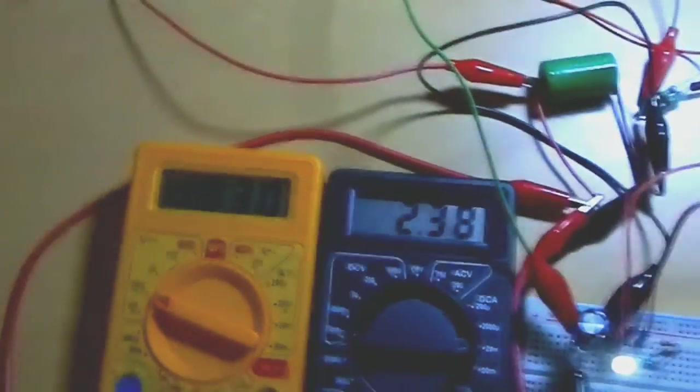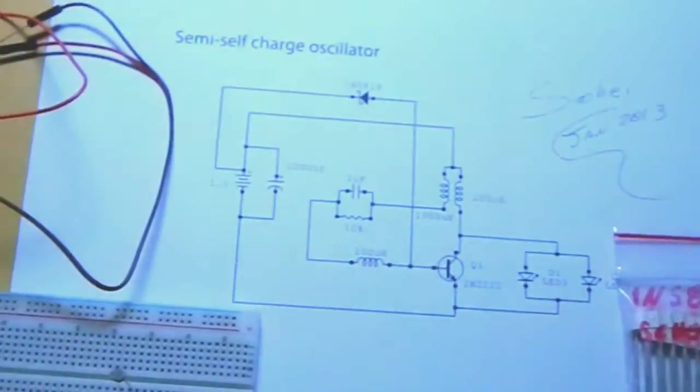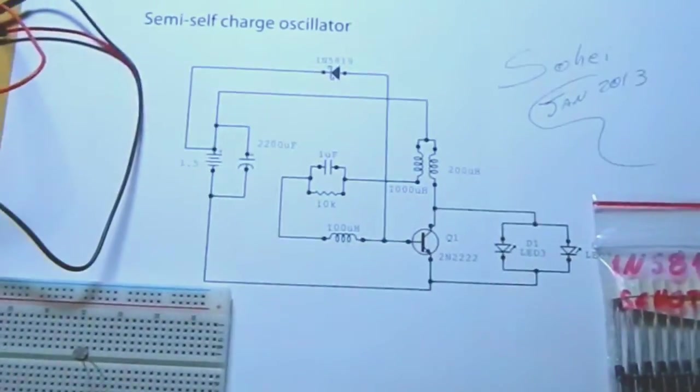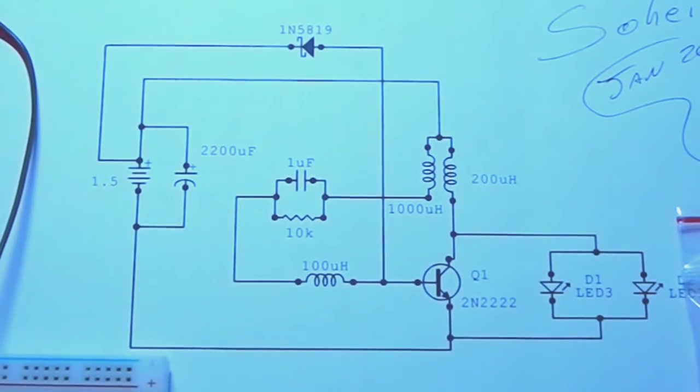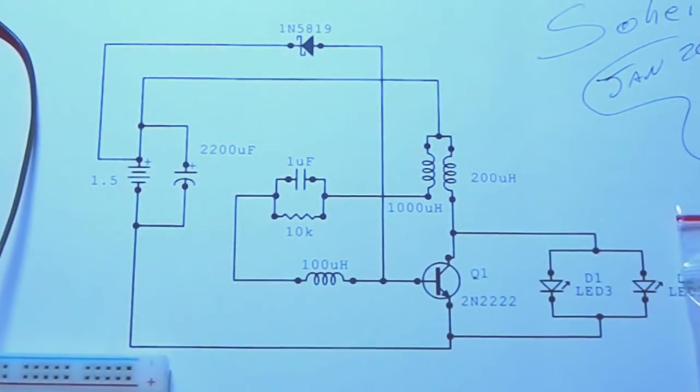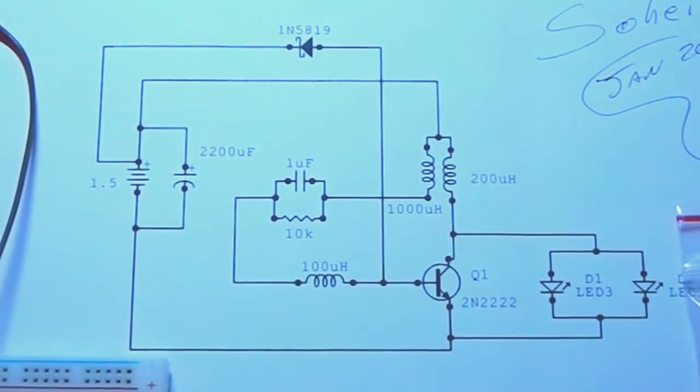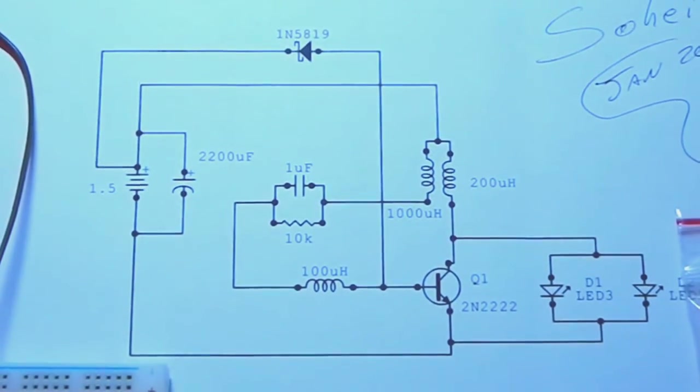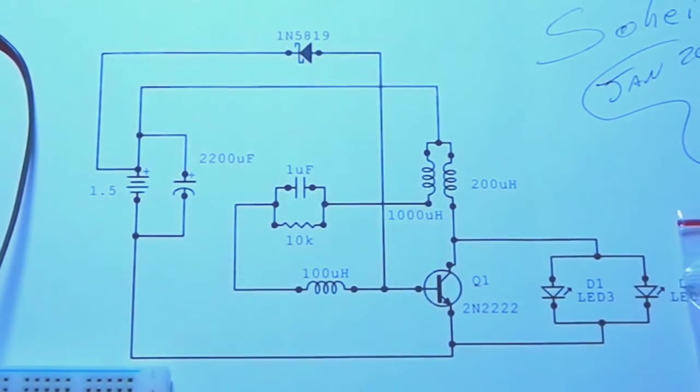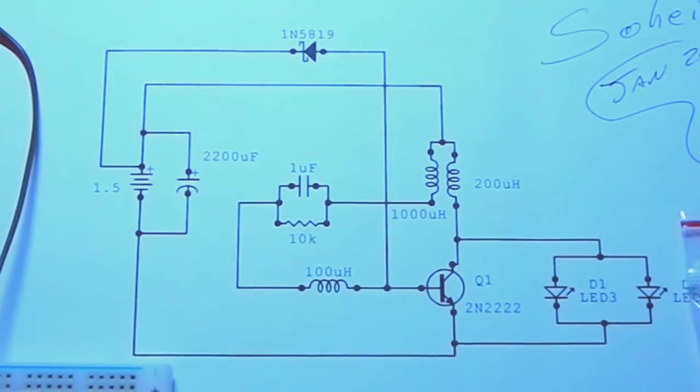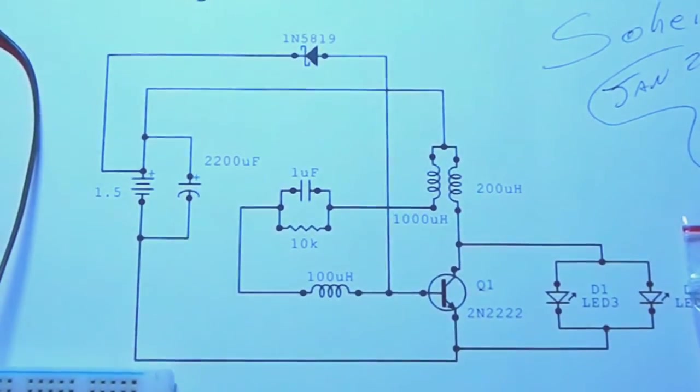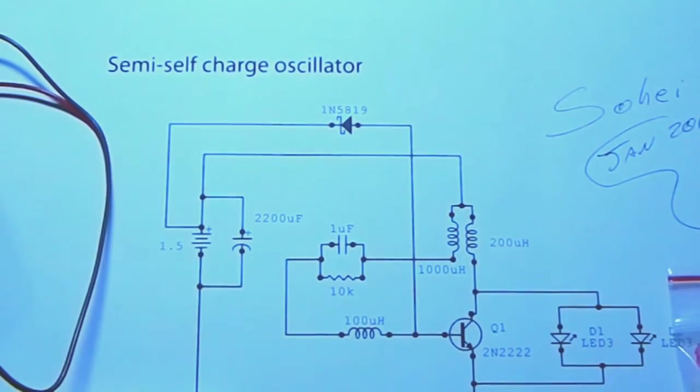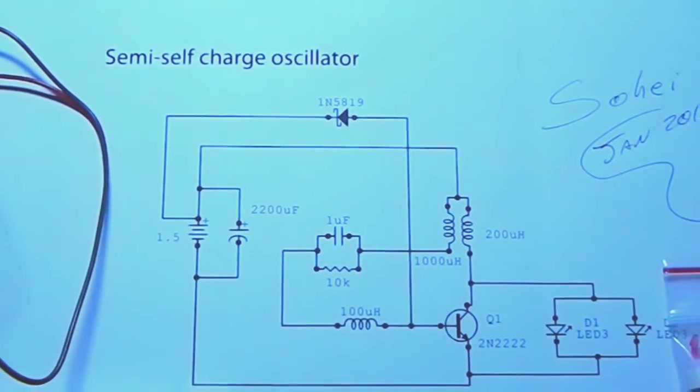So again, here is the circuit. Let me try to zoom a little bit. All the values. All the components are in this circuit. I did not forget anyone. It's everything in there. And this is a new semi-self-charge oscillator.